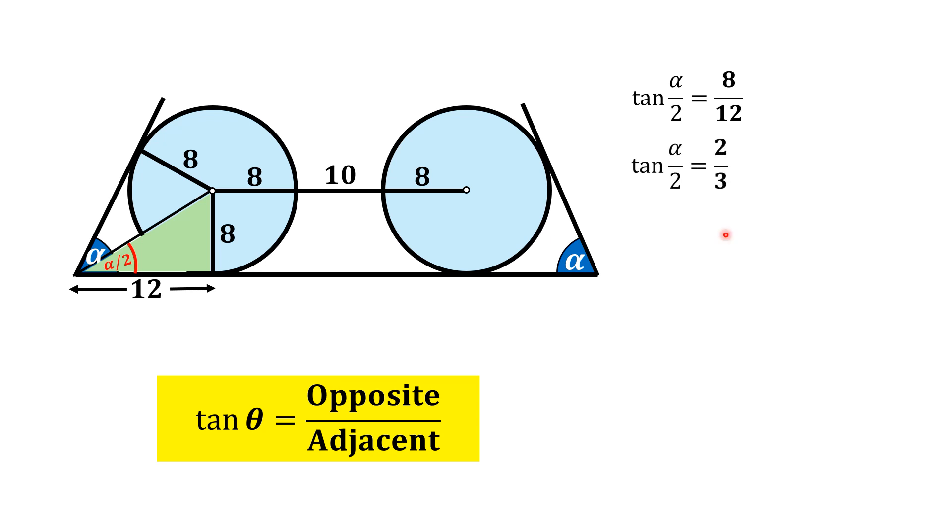So tangent alpha by 2 will be 8 over 12, and if we simplify 8 over 12, it will give us 2 by 3. So from here, alpha by 2 will be equal to tangent inverse 2 by 3, and if we calculate alpha, that will be 2 times tangent inverse 2 by 3.